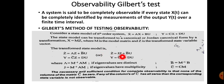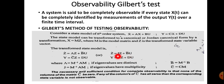The transformed state model in the distinct eigenvalue case is: z-dot = Γz + B̂u, y = Ĉz + Du, where Γ = M⁻¹AM, B̂ = M⁻¹B, and Ĉ = CM. For repeated eigenvalues, the Jordan canonical form gives: z-dot = Jz + B̂u, y = Ĉz + Du, where J = M⁻¹AM.